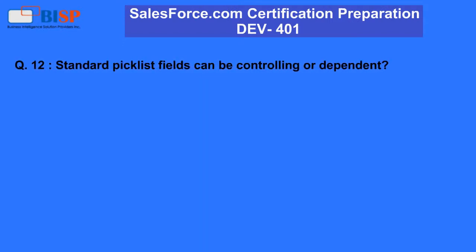Question 12: Standard pick list fields can be controlling or dependent? A. False. B. True.